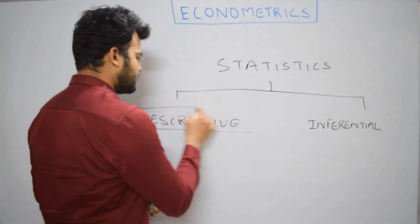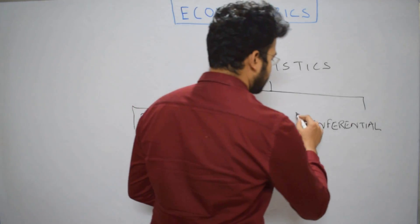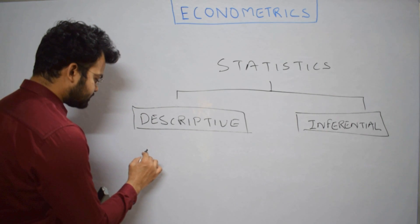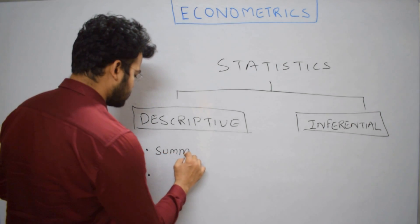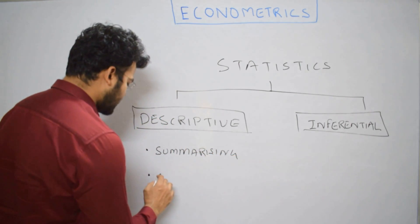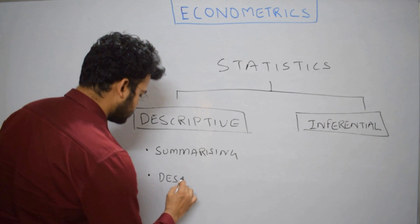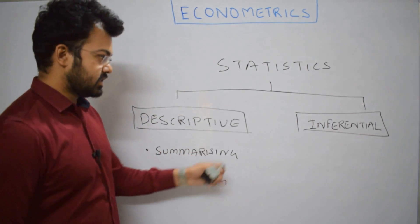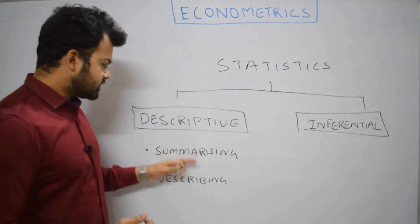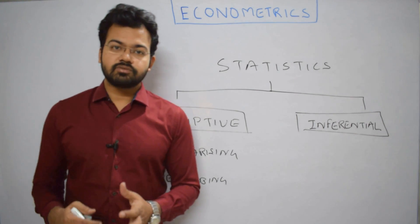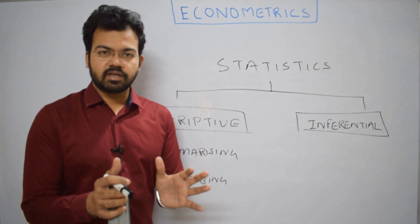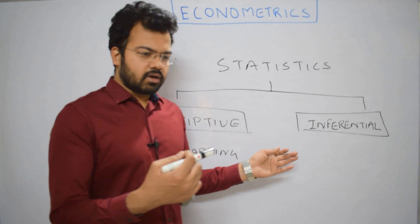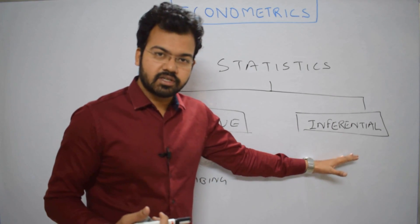Descriptive statistics developed well before inferential statistics; inferential statistics is a newer branch. Descriptive statistics is simply the summarizing and describing of a body of data. It involves the collection of a body of data and analyzing that particular data. I'll give one example of both types shortly, but first let's understand what inferential statistics is.